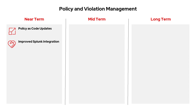On to policy and violation management. In the near term, we'll make the Splunk integration easier by consolidating the two existing methods into one. We'll also make small updates to policy as code, like supporting names by UUID, and move the CRD API from alpha to stable. This follows the GA of policy as code in 4.8.